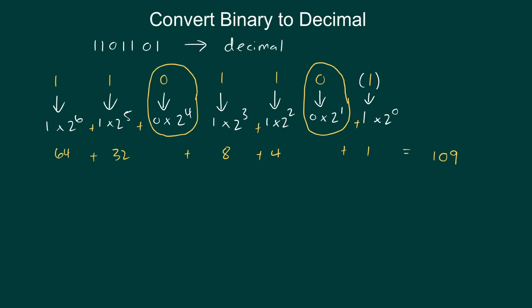This is my decimal number. This is the number 1101101 converted from binary to decimal. And to be a little bit more accurate, I'm going to write it like this. 109 base 10. And this is my final answer.